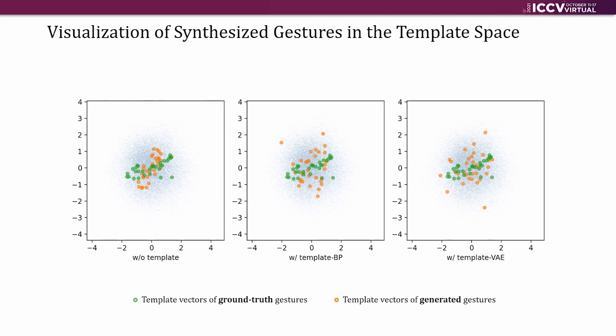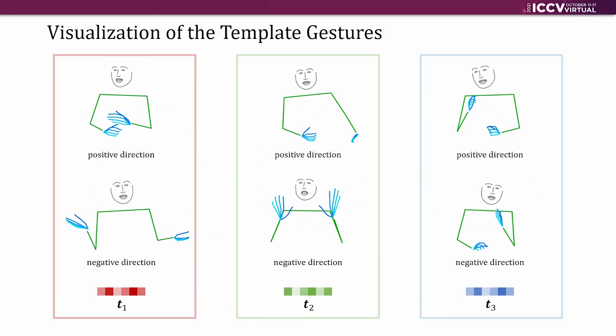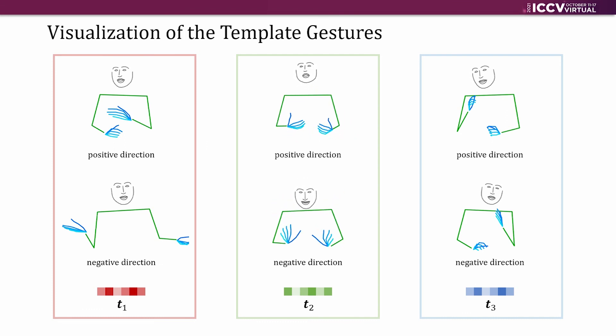Our results from template vectors span a larger space, indicating a higher diversity. The template gestures of opposite vectors exhibit clear semantic symmetry, indicating a well-trained template space.